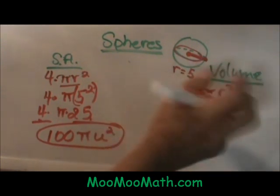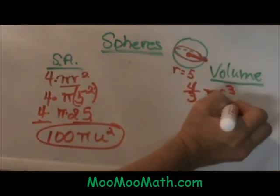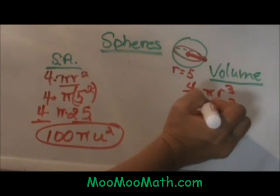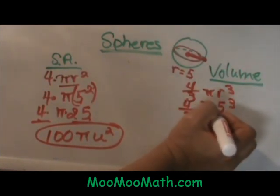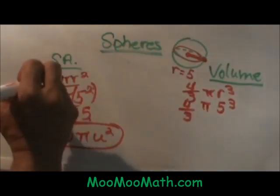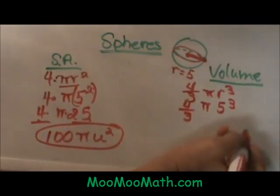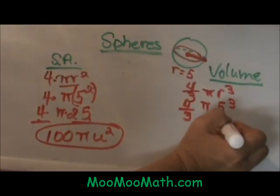So the radius is 5 so let's take 5 and we are going to cube it times pi times 4 thirds. So 5 cubed is 5 times 5 times 5 which is 125.